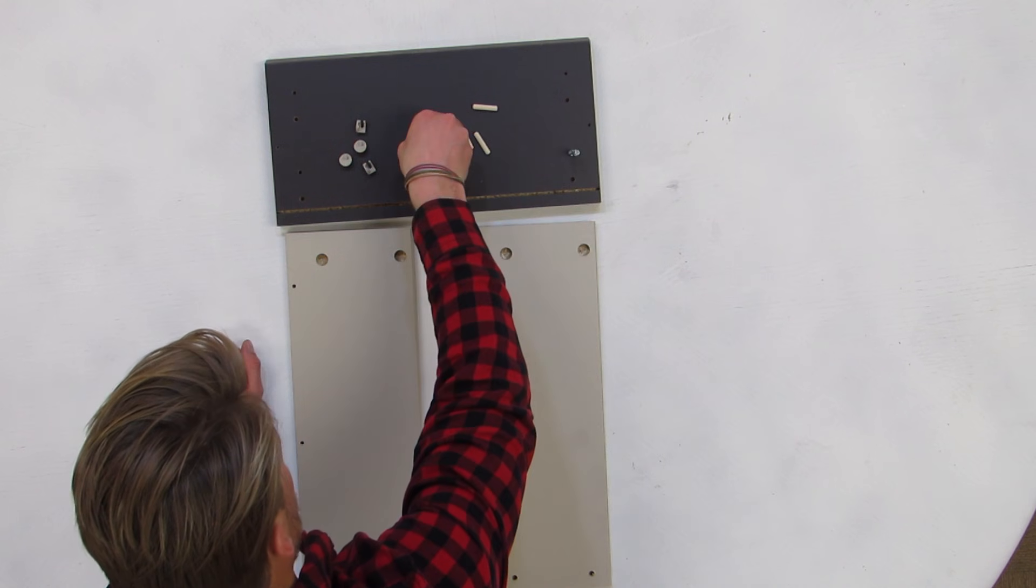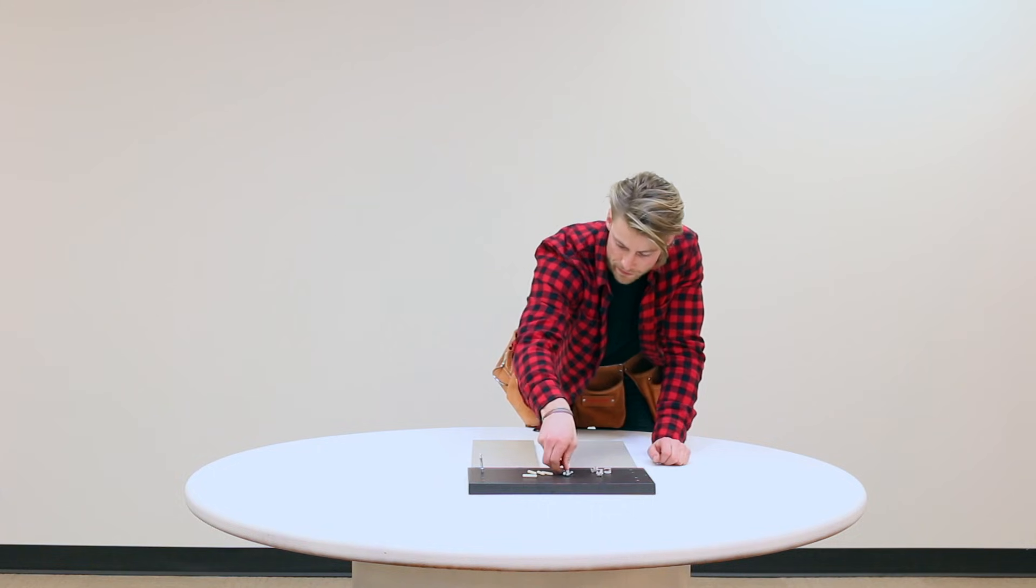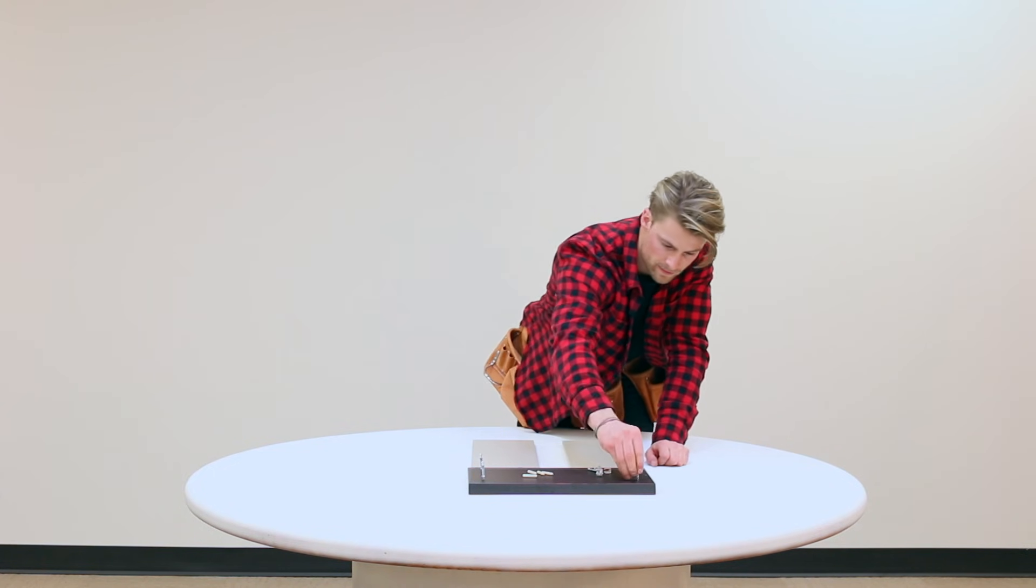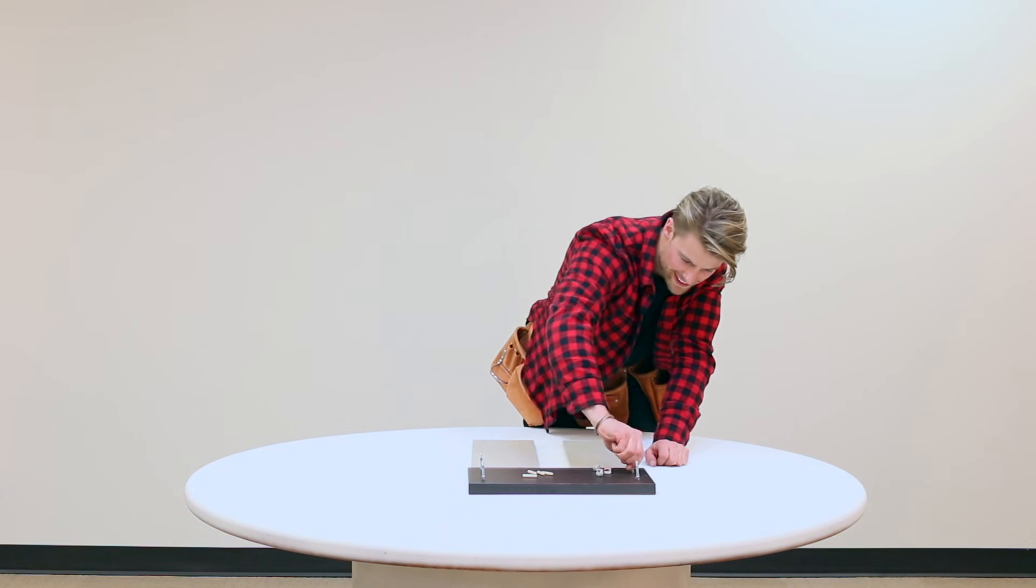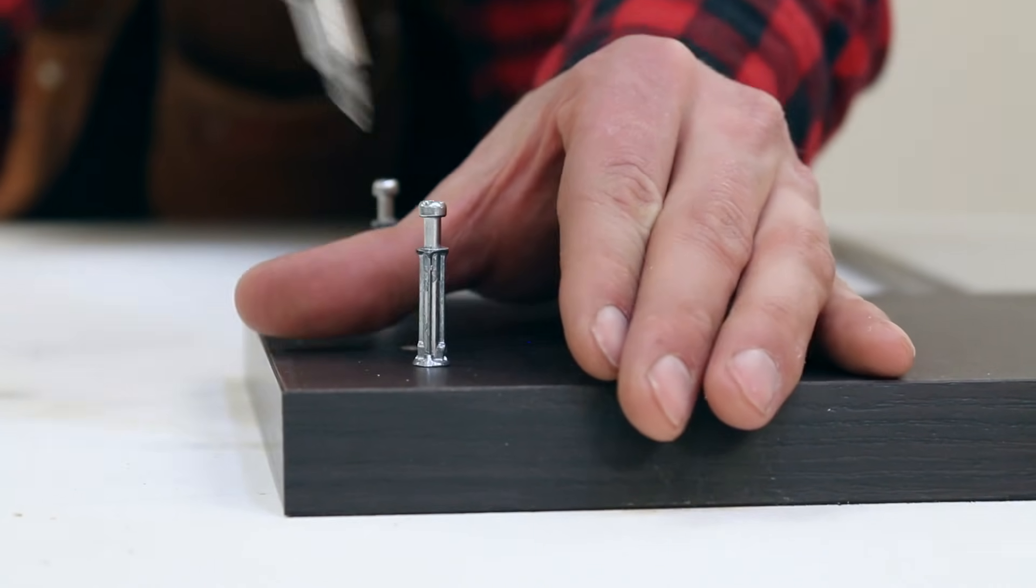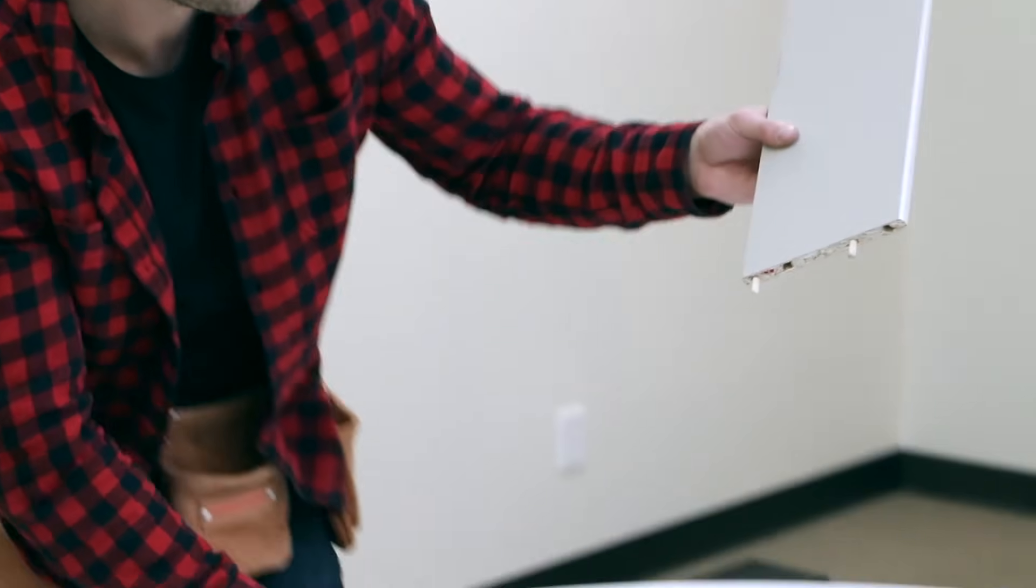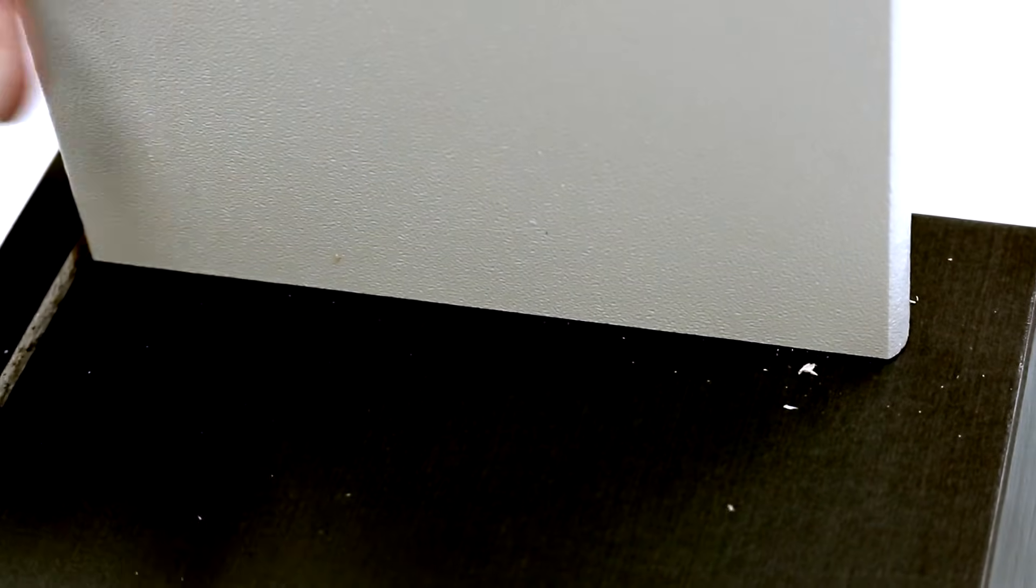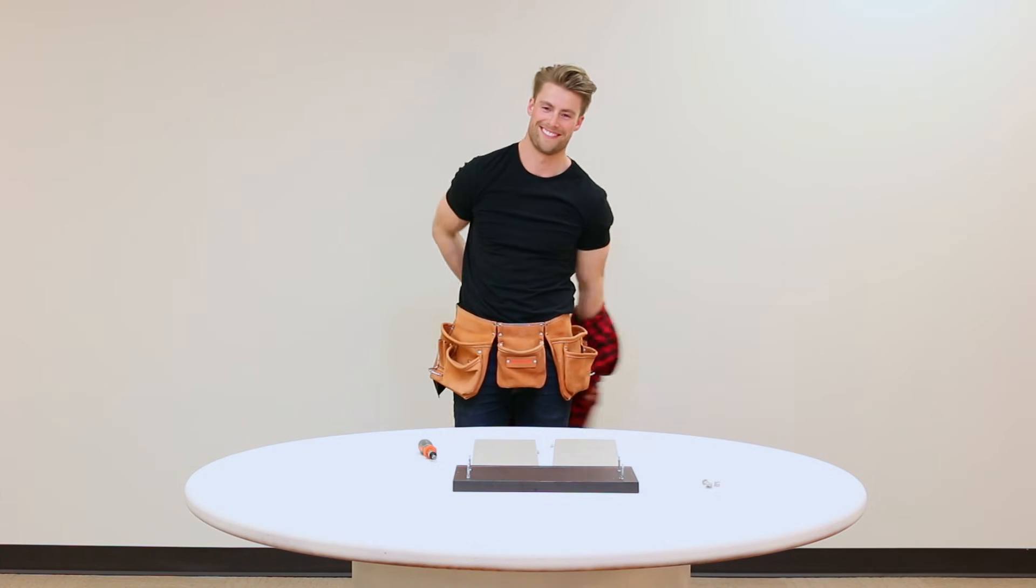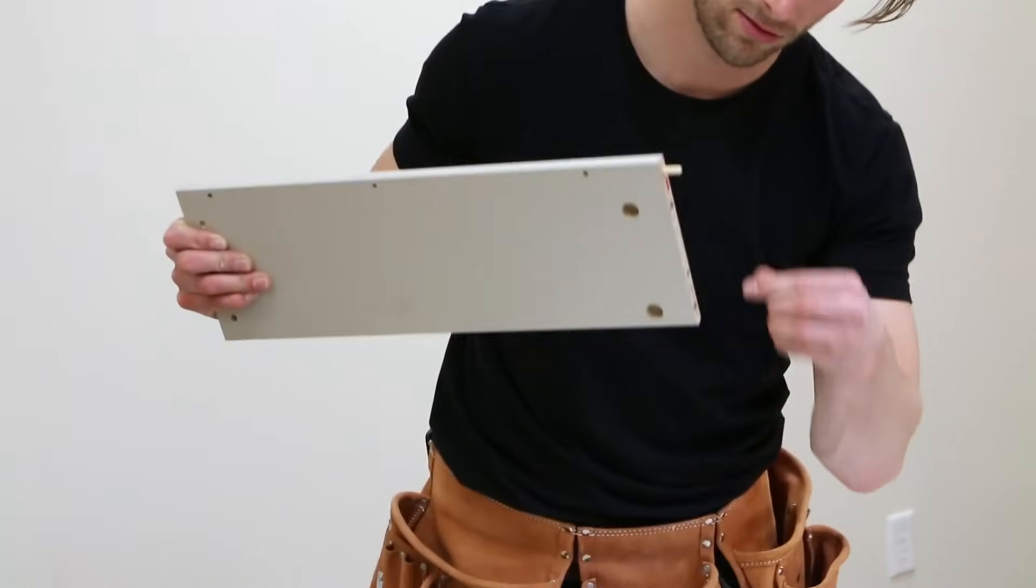Moving on to the drawers, you are going to need the face of the drawer inserting one screw into each corner of the back side using the small holes. Now you are going to take the two sides of the drawers and insert two wooden dowels into the larger holes on the ends and connect them to the screw holes on the front of the drawer.